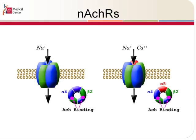In the mammalian cortex, the most abundant nicotinic acetylcholine receptor is the Alpha-4, Beta-2 containing receptor, and that's what I'm showing on the left here — Alpha-4 with three subunits, Beta-2 with two subunits, all coming together to form this functional channel. Acetylcholine binds at these Alpha-4, Beta-2 interfaces, shown in purple there.